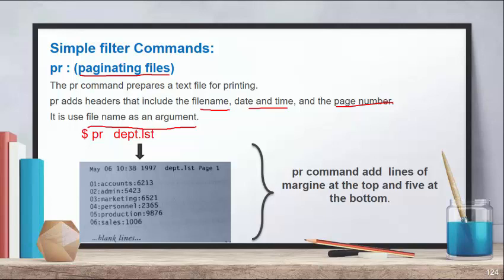When you write PR followed by the file name — for example, department.lst — that is the name of the file you want to prepare for printing. When you give this command, it will show you the output: the date and time, the name of the file, and the page number on the first line of your file.